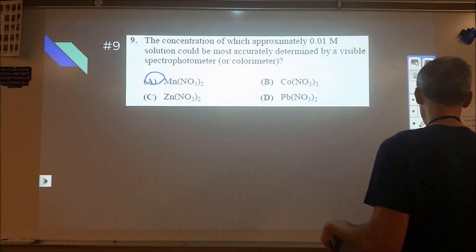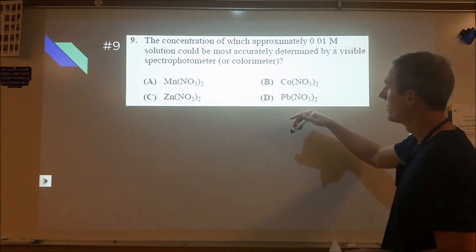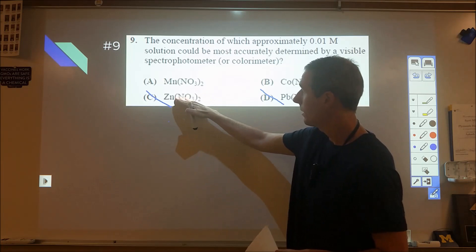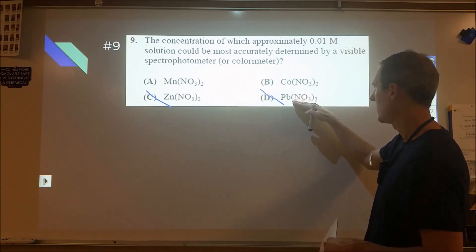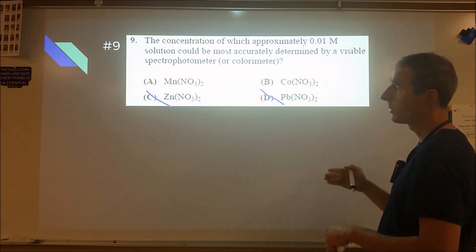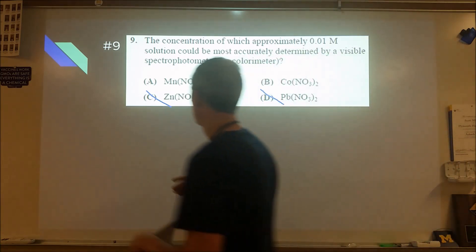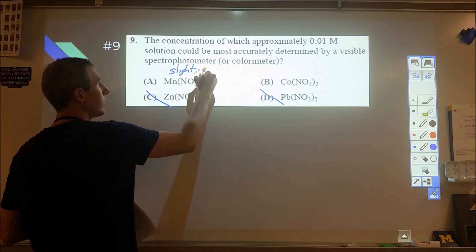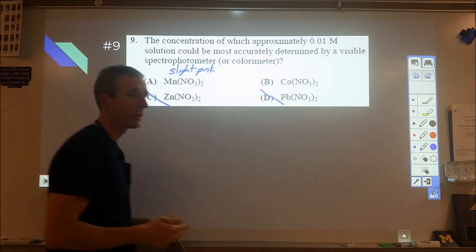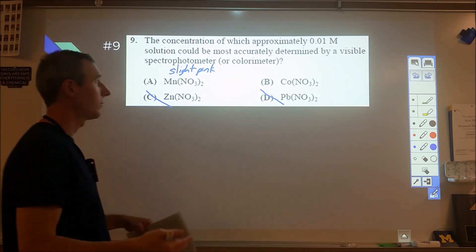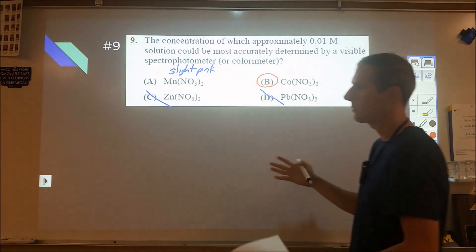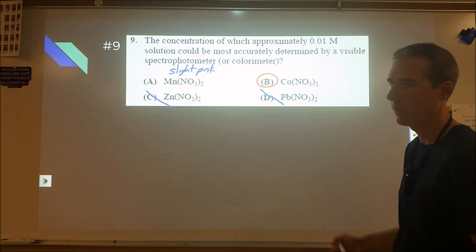Which one could be most accurately determined using a spectrophotometer? Lead nitrate is colorless. Zinc nitrate is colorless. Both because of 3d10, completely filled d-shell, so we don't get electronic transitions. Lead two plus also has a filled d-shell. Manganese and cobalt both have d-orbital splitting, both can absorb visible light. Manganese is a slight pink color. Cobalt can be blue, pink, or purple depending on what's around it. I know cobalt is definitely very colorful. Manganese is sometimes slightly colorful. Therefore B is the better answer.